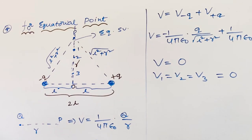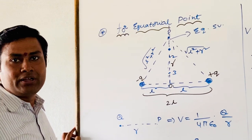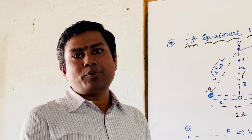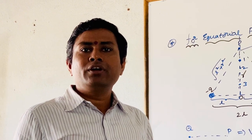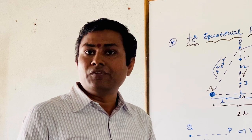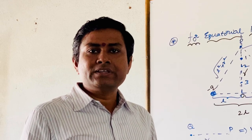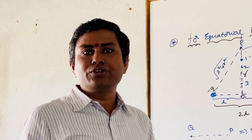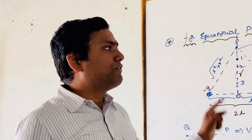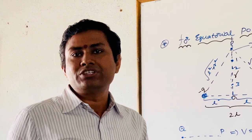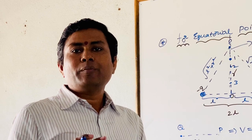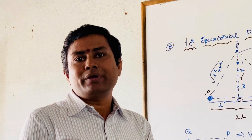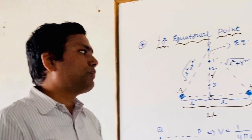An equipotential surface is a surface where the potential is the same at each and every point. In this case, if we assume a surface passing through the equatorial line, the potential is clearly 0 at every point on it. That is why this equatorial plane is an example of an equipotential surface — for the dipole, a surface passing through the perpendicular bisector is an equipotential surface.